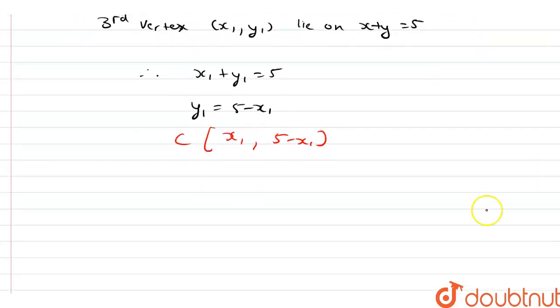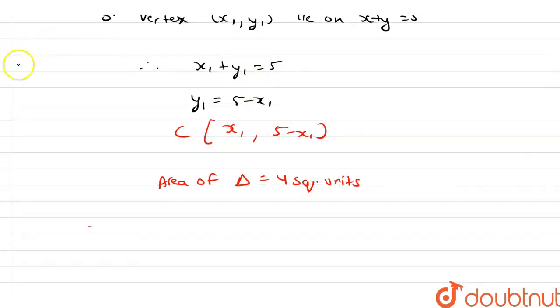As per the question, the given area of the triangle is 4 square units. Let's find the area of the triangle using the determinant formula.